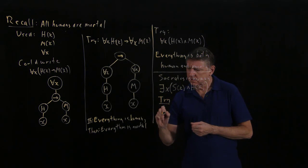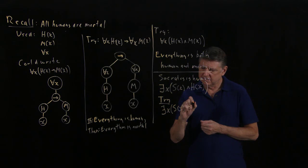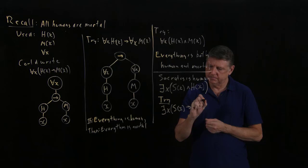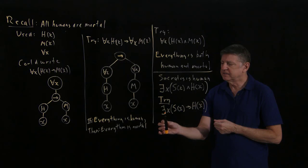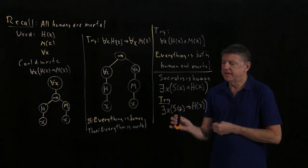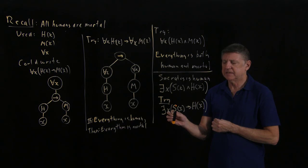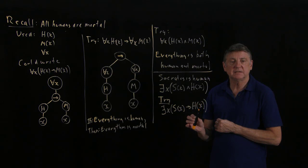Suppose instead we try: there exists an x such that if x is Socrates, then x is human. Let's reason this out. We're saying there exists an x such that if x is Socrates then x is human. That captures part of this, but not everything. Suppose x is a rock — it's not true that x is Socrates, so the antecedent is false. A false antecedent implies anything, so even a rock would satisfy this statement. And that's certainly not what we mean.